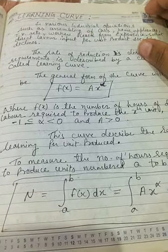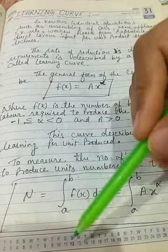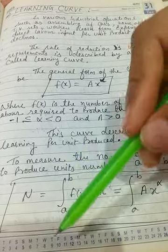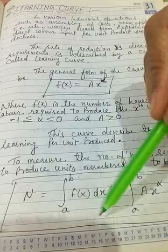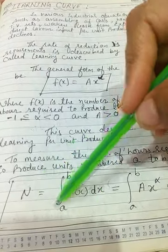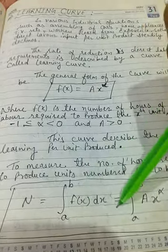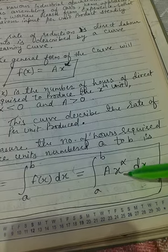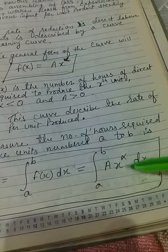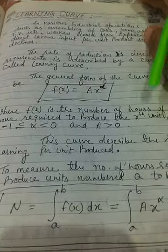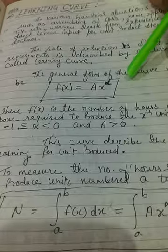Whenever we want to calculate the number of labor hours required to produce in the range a to b, we use the learning curve: N = ∫ from a to b of f(x) dx = ∫ from a to b of A·x^α dx. Using this learning curve, we generally calculate the number of labor hours required to produce any product.